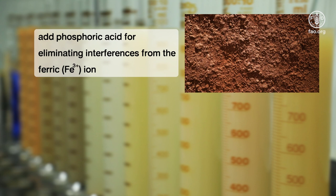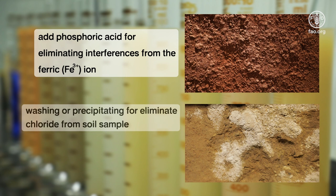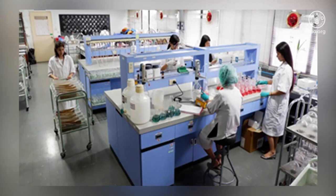we recommend adding phosphoric acid after the sample has been cooled in order to eliminate interferences from the ferric ion. Wash soil samples free of chloride before analyzing or precipitate the chloride as silver chloride by addition of silver sulfate to the digestion acid.